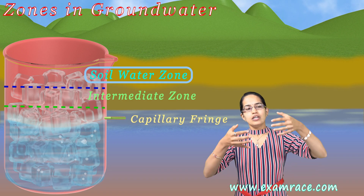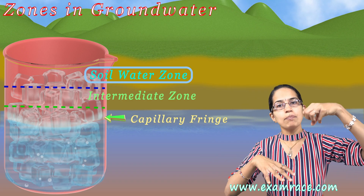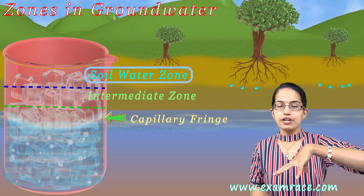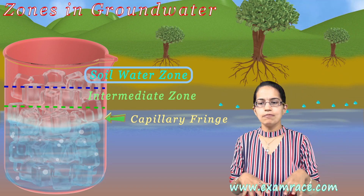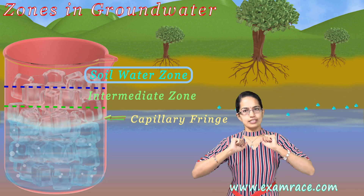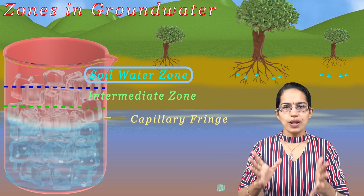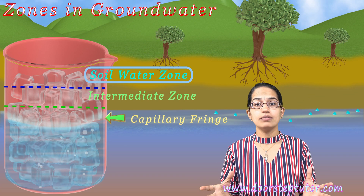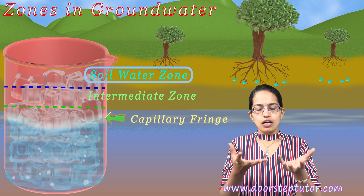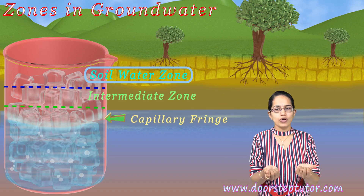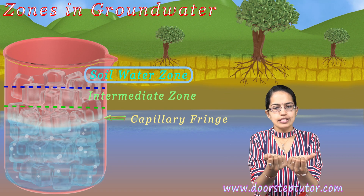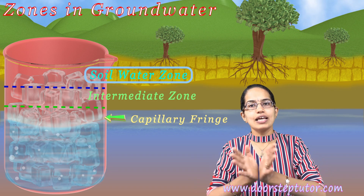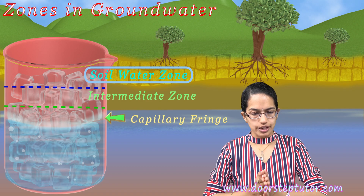The soil water zone is the uppermost zone, and this is the zone where you have soils with plant roots. Plant roots have a unique characteristic here: with the water present in the soil, these plants could survive. Now what would happen if this soil becomes very dry? The forces holding the water are so great that they would allow the plant to access all the water and then the soil would dry off.